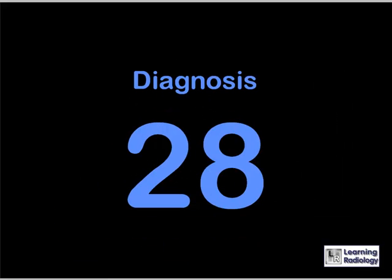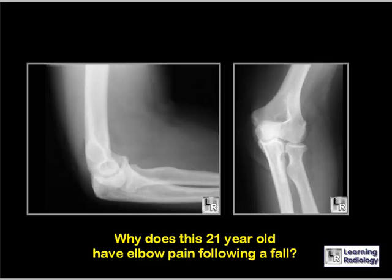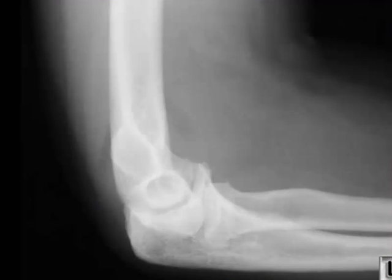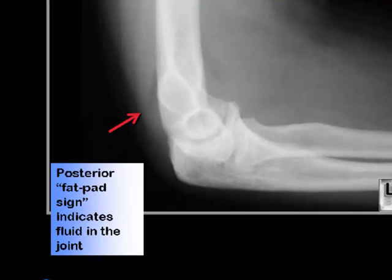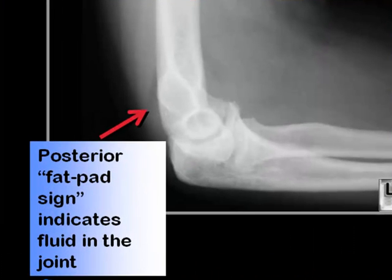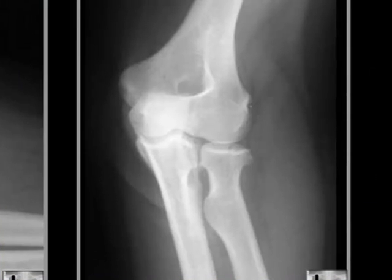Why does this 21-year-old have elbow pain following a fall? On the lateral view, there is the posterior fat pad sign — a triangular lucency (red arrow) extending posterior to the distal humerus, indicating extension of the joint capsule by fluid. On the oblique view, the green arrow points to a lucency representing a fracture of the radial head.